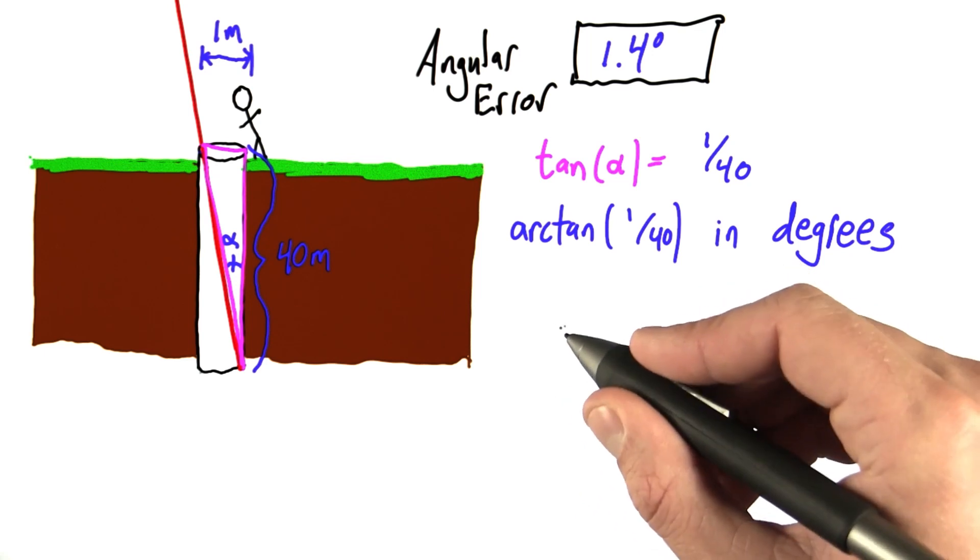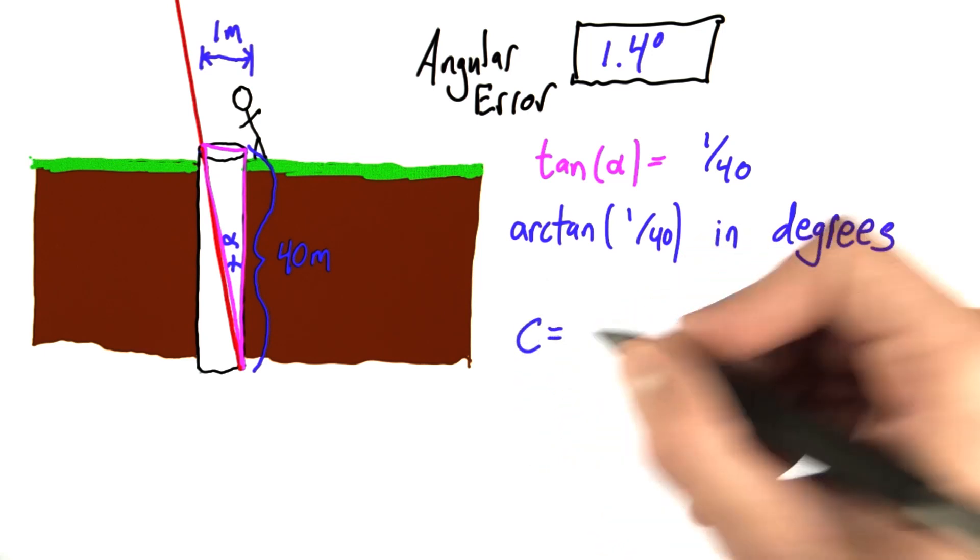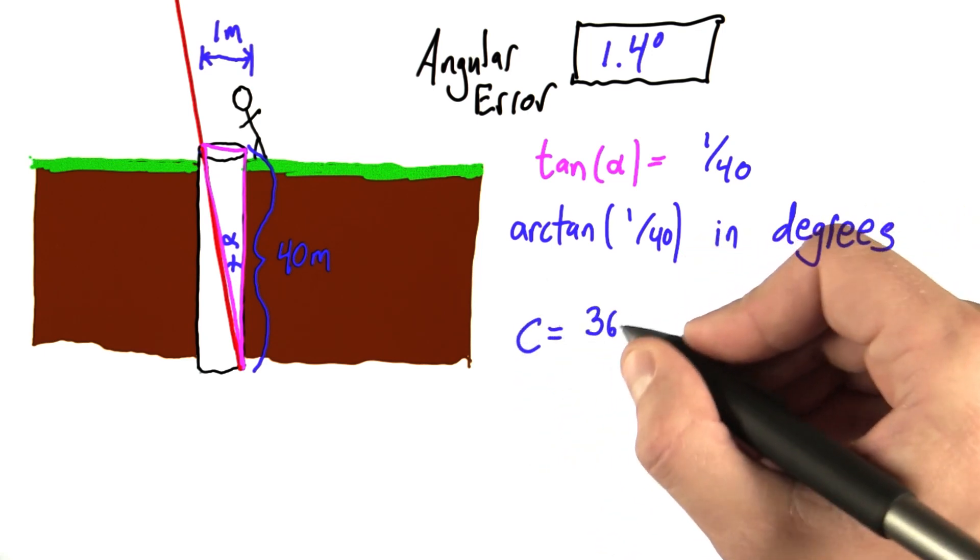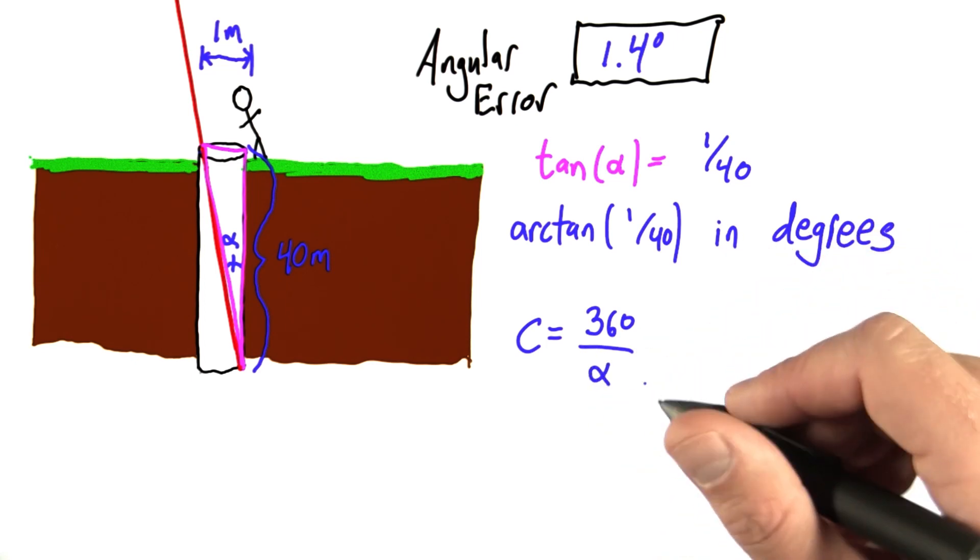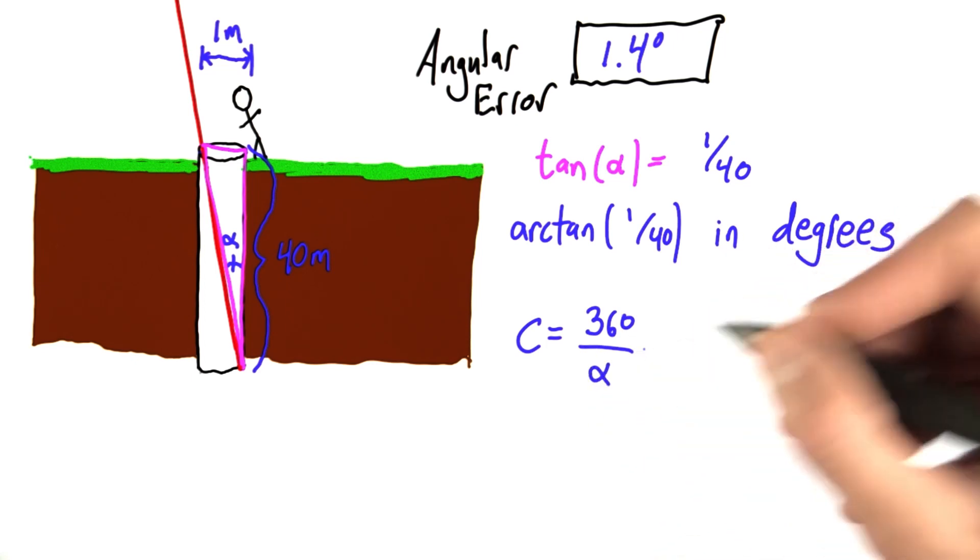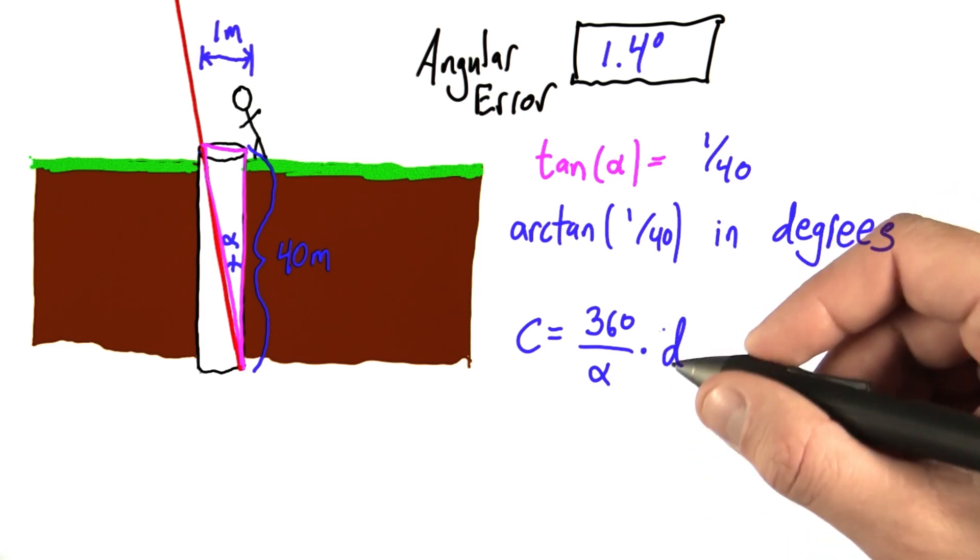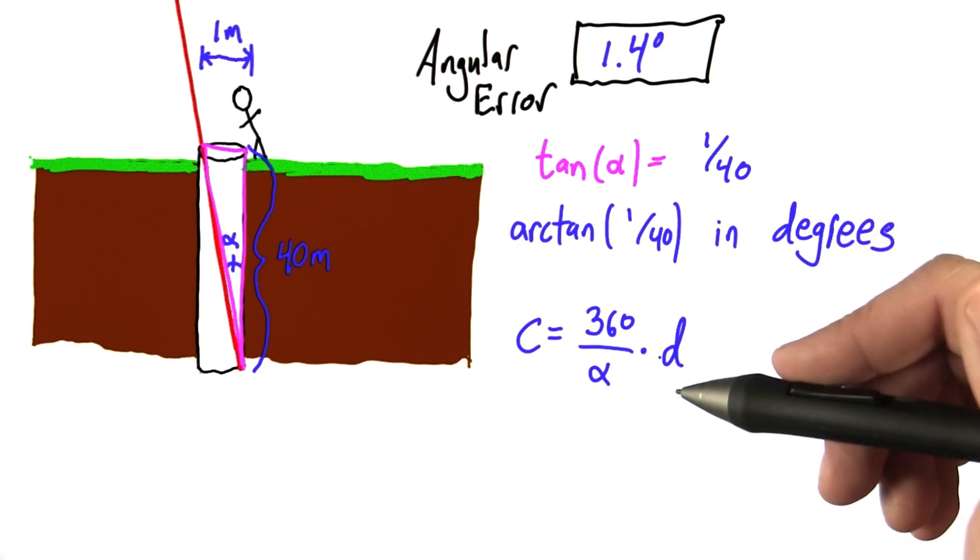So let me remind you what the equation we used was. The circumference was equal to 360 over the angle we were talking about before, which we called alpha, times d, where d was the distance from Siena to Alexandria.